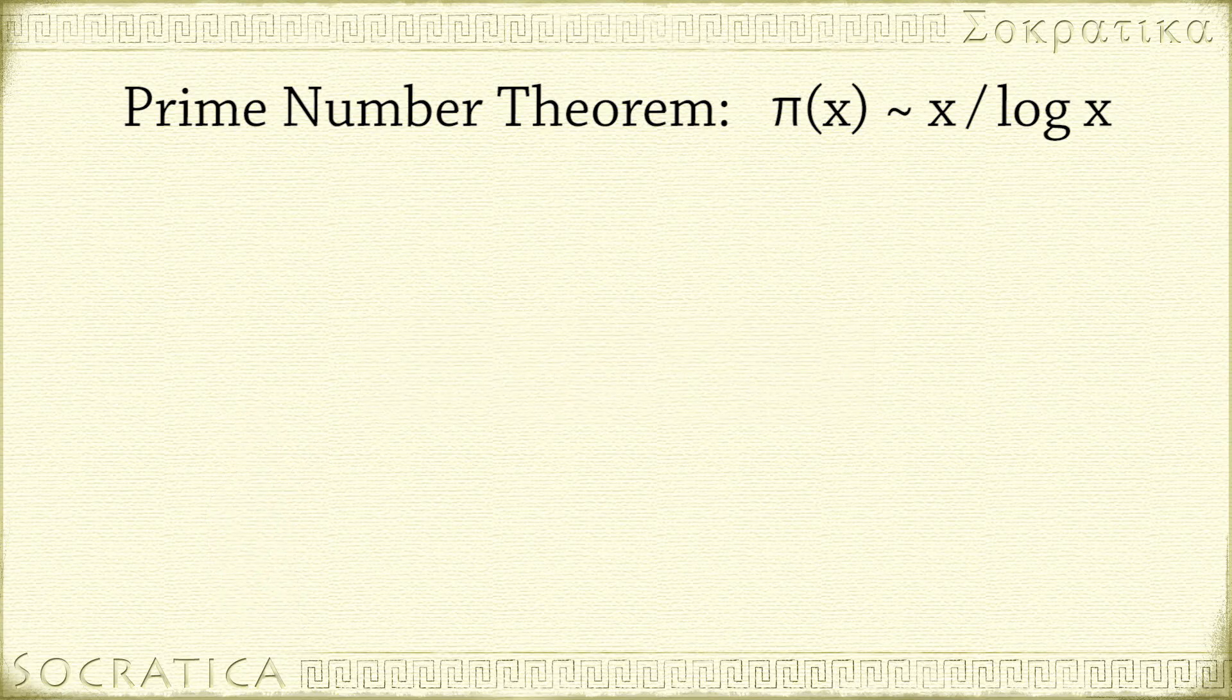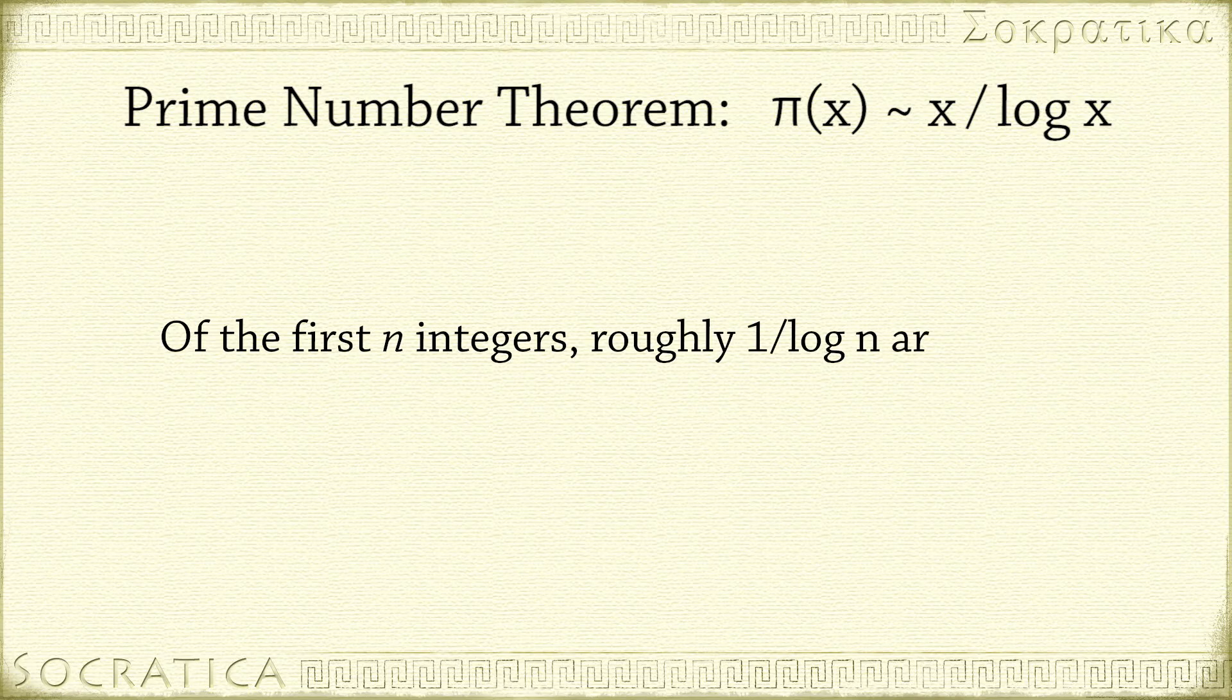Another way to interpret the prime number theorem is that of the first n integers, roughly 1 over log n of them will be prime.